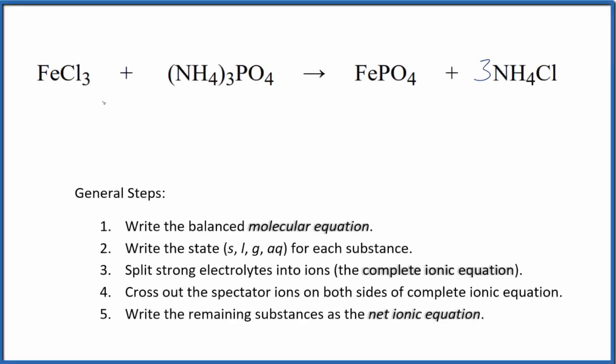To write the balanced net ionic equation for iron chloride plus ammonium phosphate, first we need to balance the molecular equation. This is the molecular equation. I've already balanced it with this coefficient of three in front of the ammonium chloride.